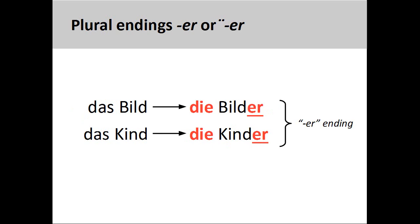The third group consists of nouns that add -er for a plural ending. Most of the nouns in this group are masculine and neuter nouns having one syllable. The noun Kind, child, belongs to this group: Kinder. The noun Bild, picture, also belongs to this group: Bilder.